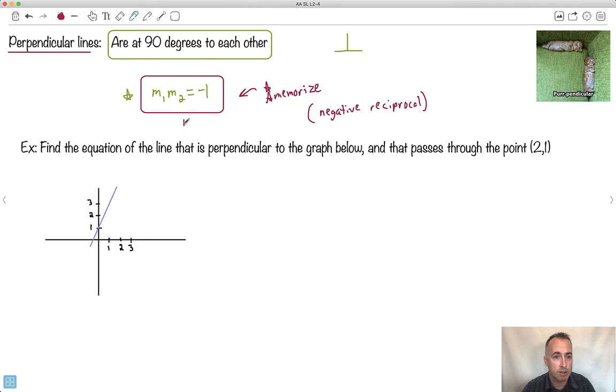What I mean by that is if you want to know m2, what do you do? Well, it's going to be minus 1 over m1. See that if I want to get m2 by itself. So, what do I do? Whatever gradient I have, I flip it. That's the reciprocal. And I do a negative. So, really, that's sort of the useful version. So, if we want to find an equation of a line that's perpendicular to this graph below, and it passes through the point 2, 1.